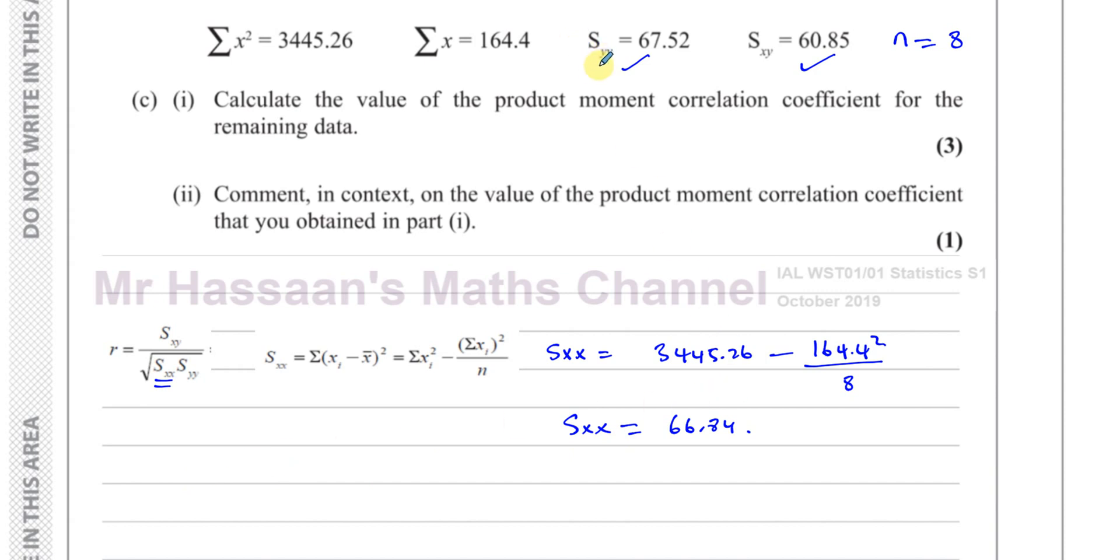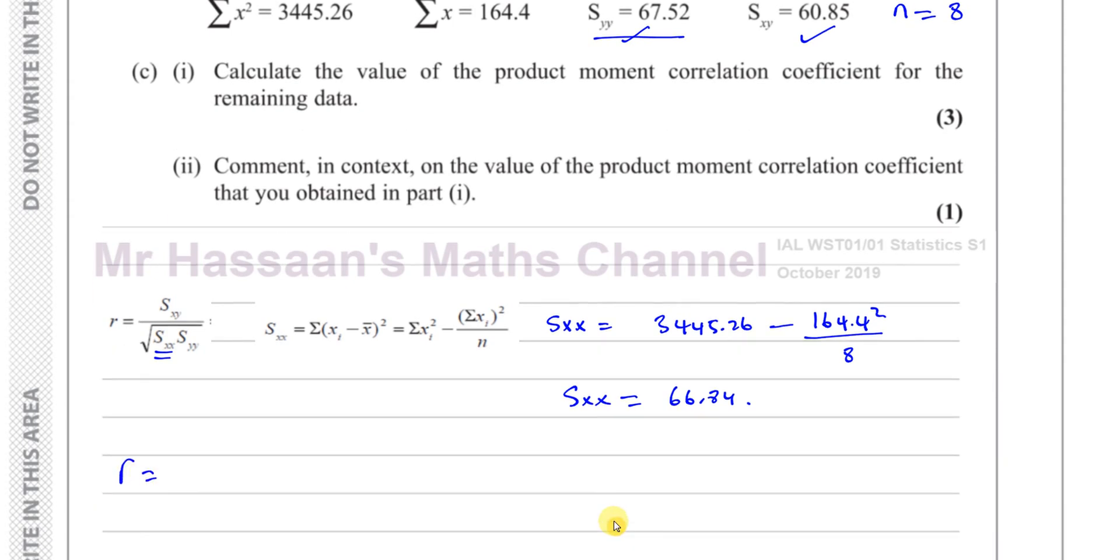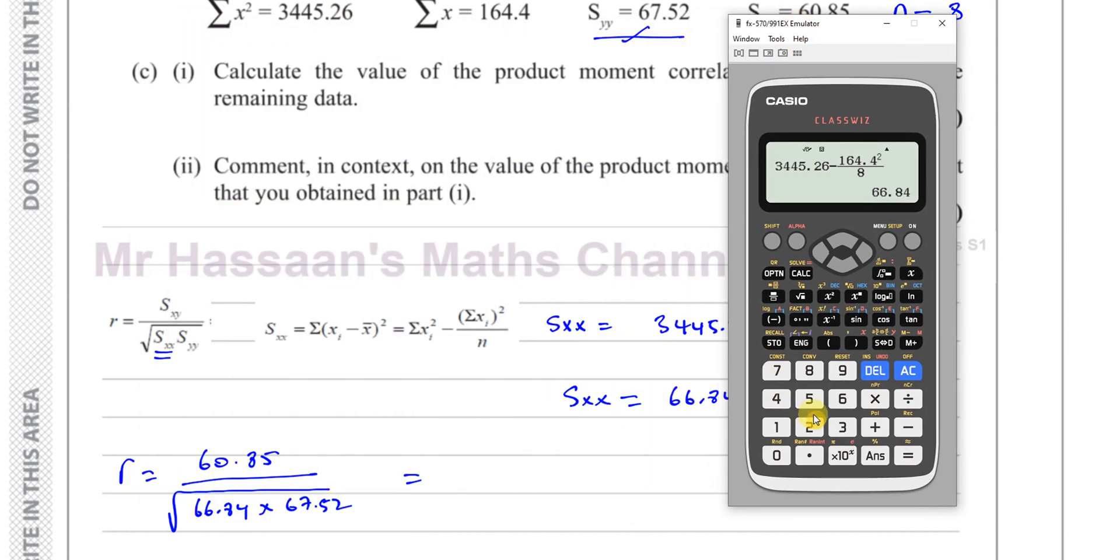So now we have everything we need. We've got SYY, SXY, SXX. So we can say R is equal to, we can take these values. So we have SXY, which is 60.85, divided by the square root of SXX, which we just found, 66.84, multiplied by SYY, which is 67.52. So that's the value of these. So let's find out what that gives us. So we're going to have fraction 60.85 divided by the square root of 66.84 multiplied by 67.52.